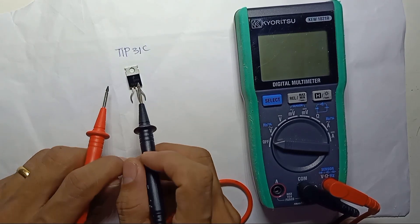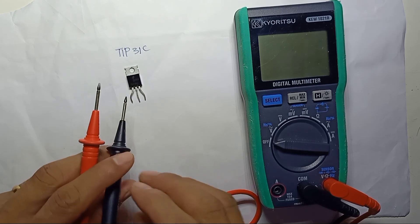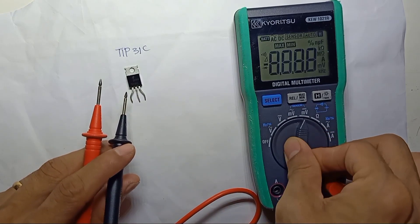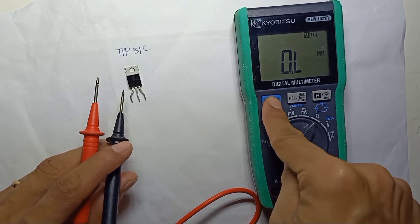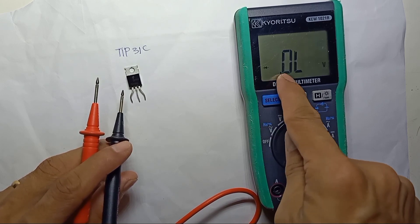TIP31C. This is a transistor. So you want to check the transistor using a digital multimeter. We select the diode testing mode. So this is diode testing mode.